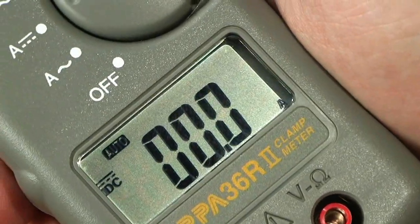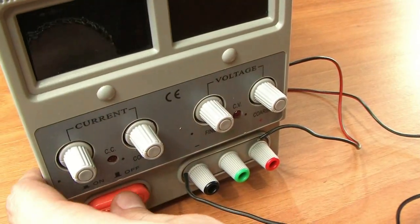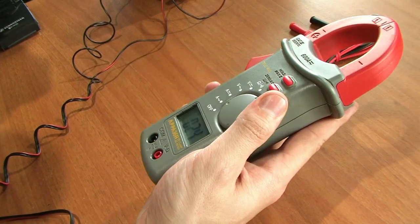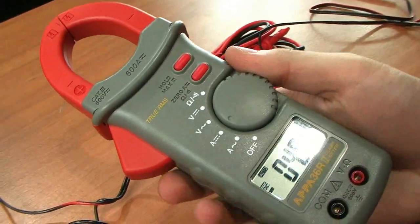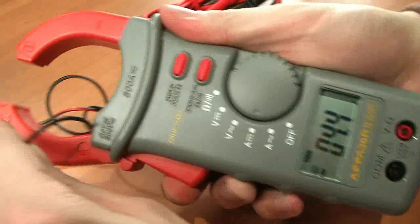Let's measure strength of current in this cable. To do this, we set the rotary function switch to measure direct current, then we grab the cable with the device grips. Indications are shown on the LCD display.